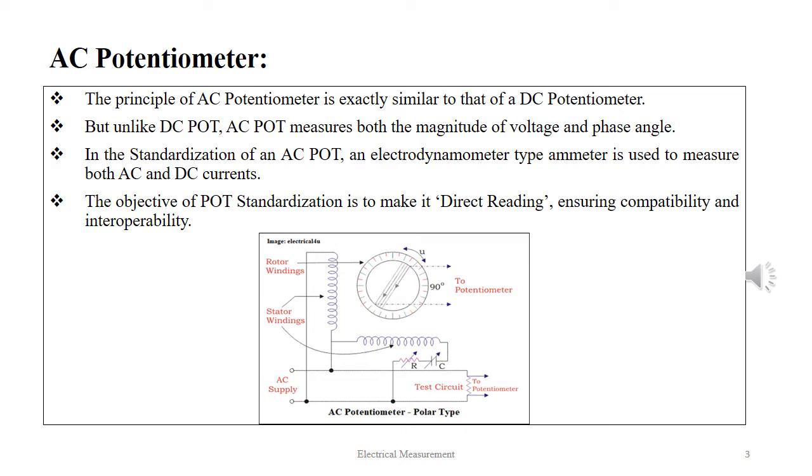In the standardization of an AC pot, an electrodynamometer type ammeter is used to measure both AC and DC currents. The objective of pot standardization is to make it direct reading, ensuring compatibility and interoperability.